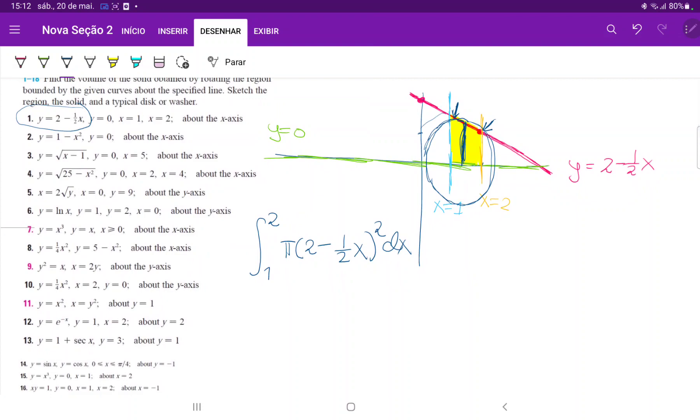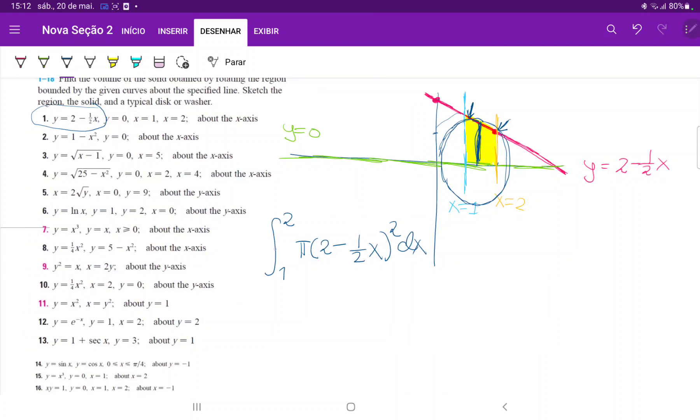So now before we integrate it, let's just expand this so it's easier to integrate it. So this is, and I'll put the pi outside because it's just a constant, pi times the integral from 1 to 2. And then we'll just foil this. So this is 1 quarter x squared minus 2 times 1 half, so that is minus 2x and then plus 4, and all of this times dx.